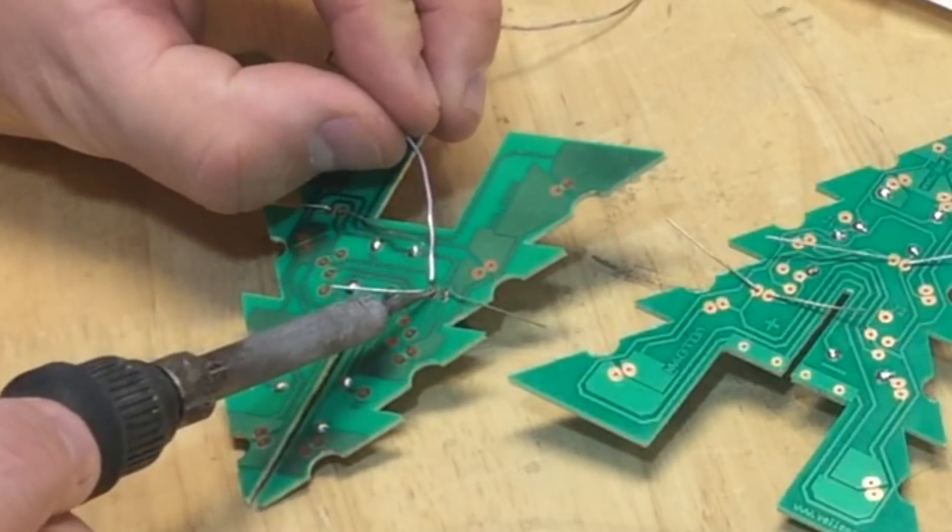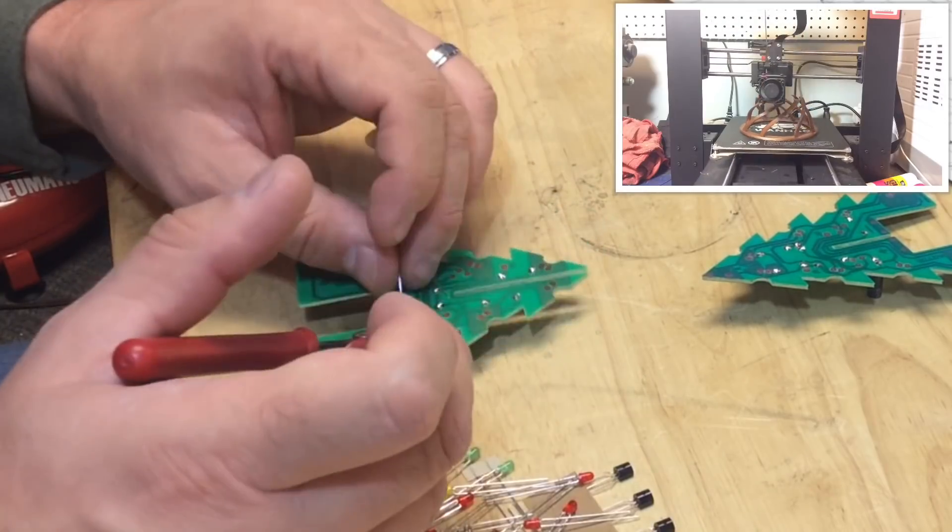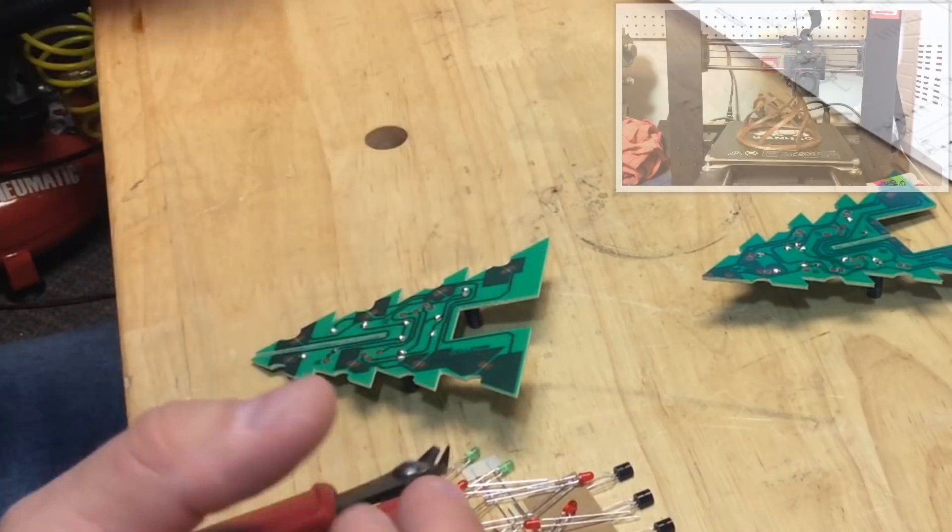So it's really just like putting a resistor in, but you've got to make sure you get the right lead in the right hole. You can check the 3D print—it's about halfway done. It's looking good.